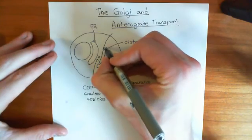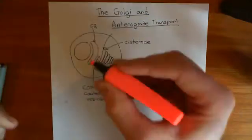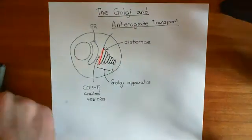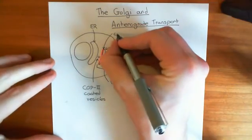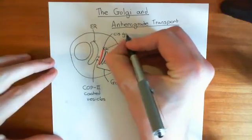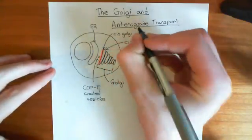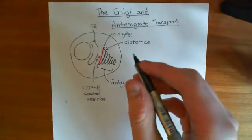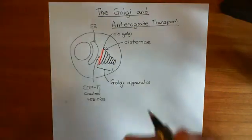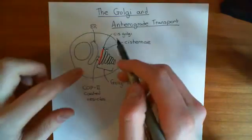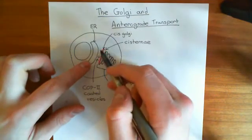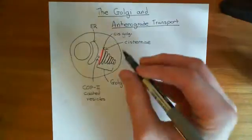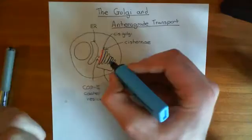Vesicles bud off from the endoplasmic reticulum and make their way to what's known as the cis side of the Golgi — the side facing the endoplasmic reticulum. This is known as the cis-Golgi. Cis, probably from Latin, means 'same' — it's on the same side of the cell as the ER, so it's near the ER.